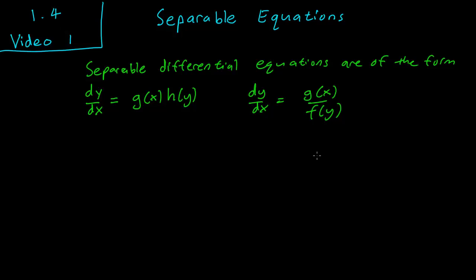So how do you solve these separable equations? Let's take this one, the one on the right, and solve it from there. The other form can be solved in roughly the same way. So we have dy over dx equals g(x) over f(y).